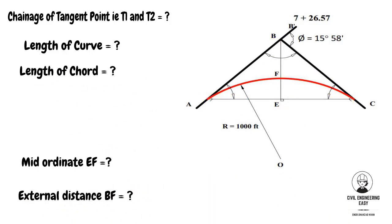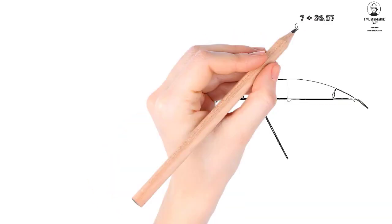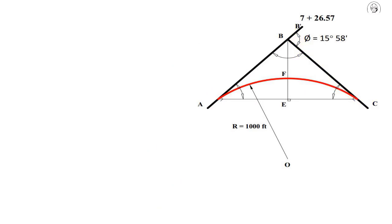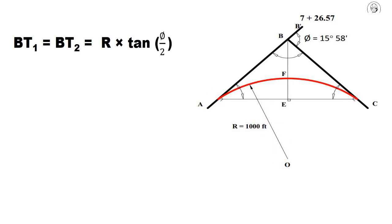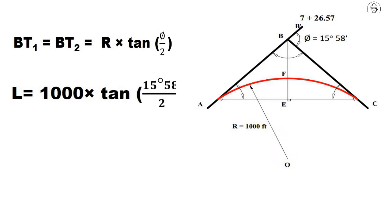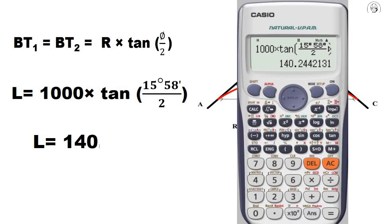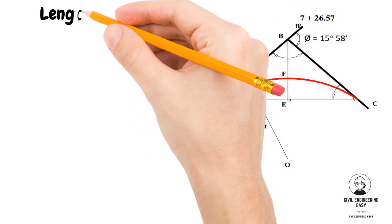First, we need to find the tangent length using the relation: BT1 = BT2 = R × tan(Δ/2), where R is the radius of the curve. Putting in the values — radius equals 1000 feet, deflection angle equals 15 degrees 58 minutes — we get the tangent length BT1 = BT2 = 140.24 feet.